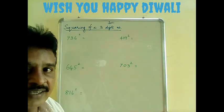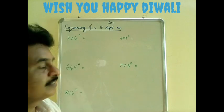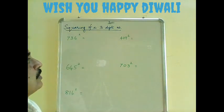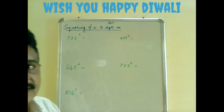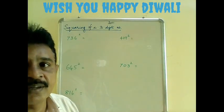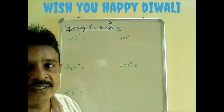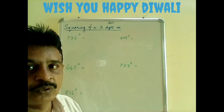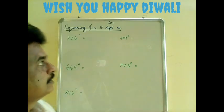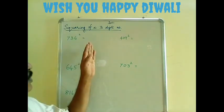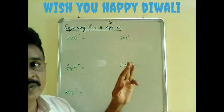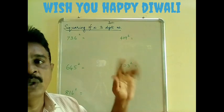As we have already seen squaring of a two digit number, here we use the formula (a + b + c) whole square.